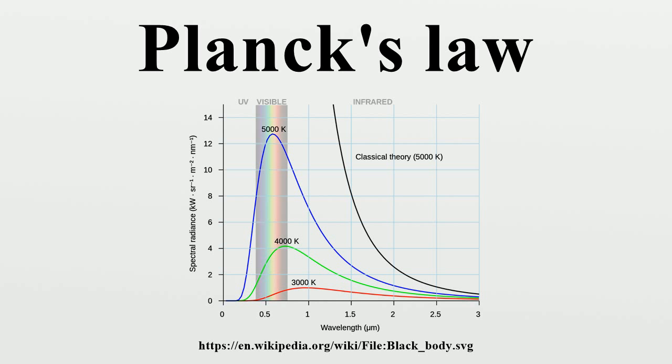Max Planck developed the law in 1900, originally with only empirically determined constants, and later showed that, expressed as an energy distribution, it is the unique stable distribution for radiation in thermodynamic equilibrium. As an energy distribution, it is one of a family of thermo-equilibrium distributions which include the Bose-Einstein distribution, the Fermi-Dirac distribution and the Maxwell-Boltzmann distribution.